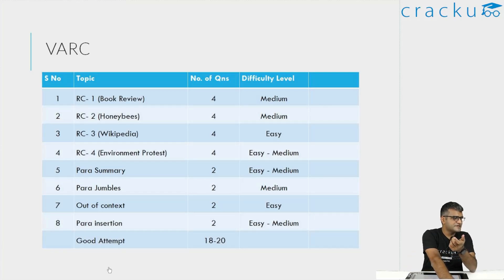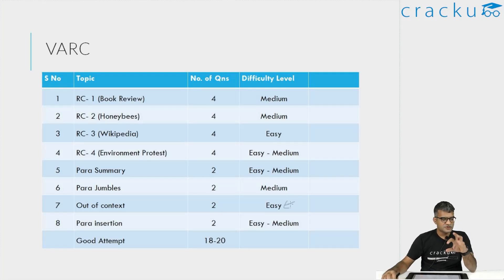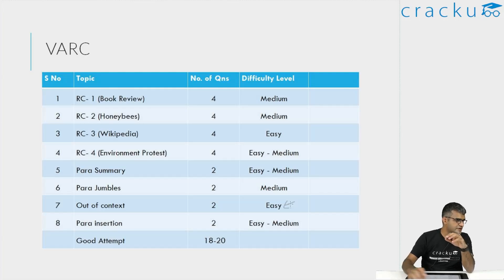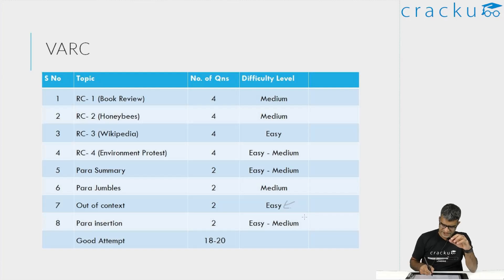With respect to out-of-context questions, I think one of them was definitely on the easier side — we actually categorized it as easy because most people should get it correct. This also involves some climate-related content. Para insertion: both of them were not very difficult, but some people struggled. That is why we put them as easy to medium, but personally I felt the para insertion was not very difficult.